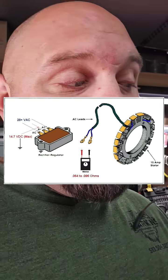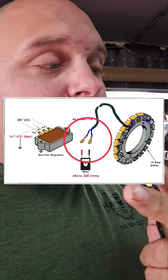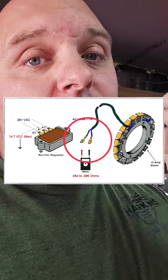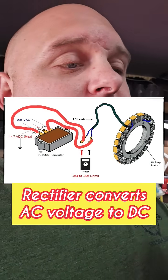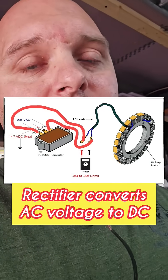When it leaves there, it's usually two wires and they go into a voltage regulator rectifier. The rectifier is what changes the AC volts to DC volts.